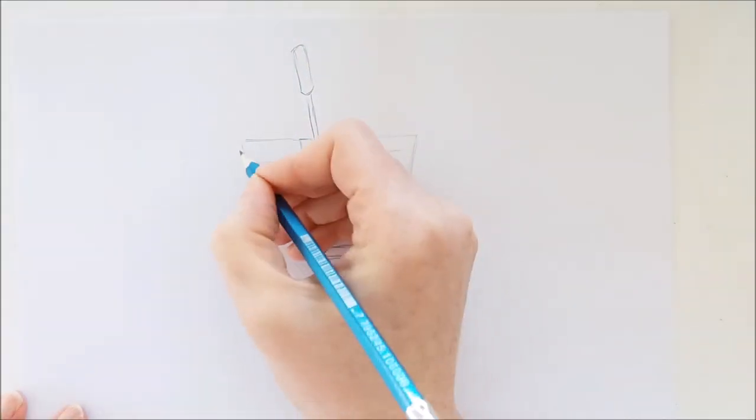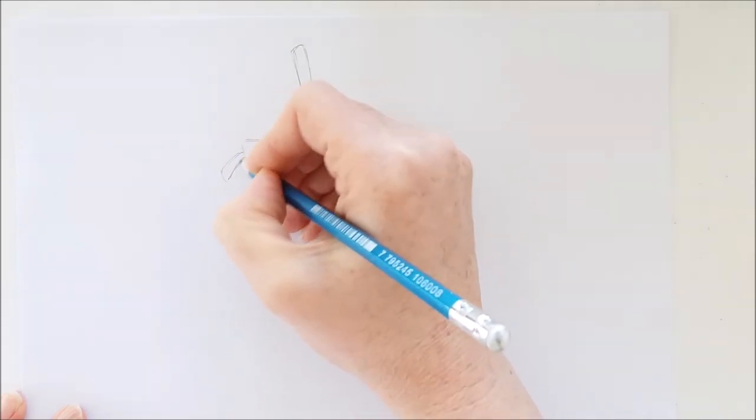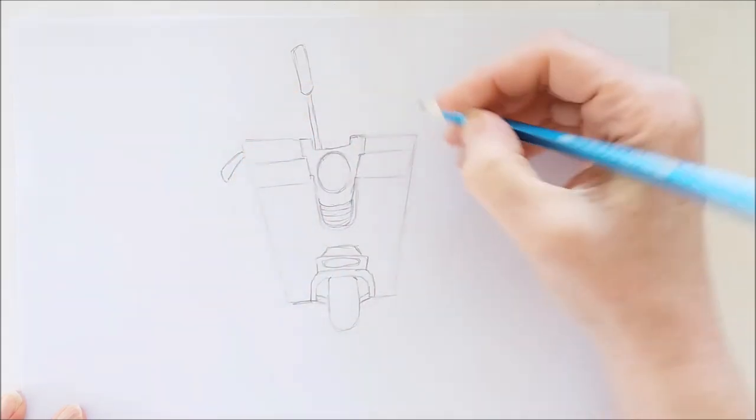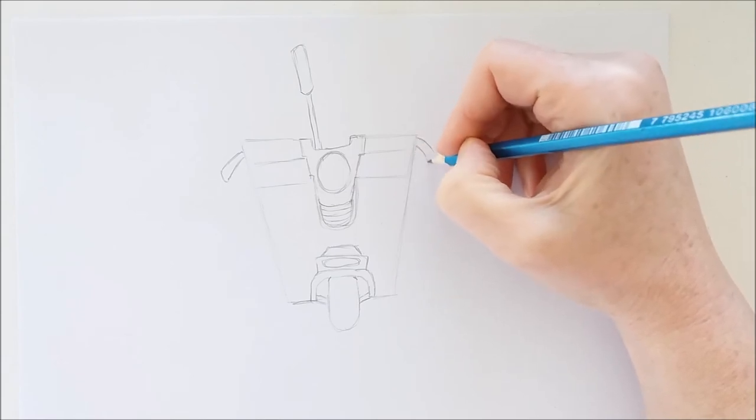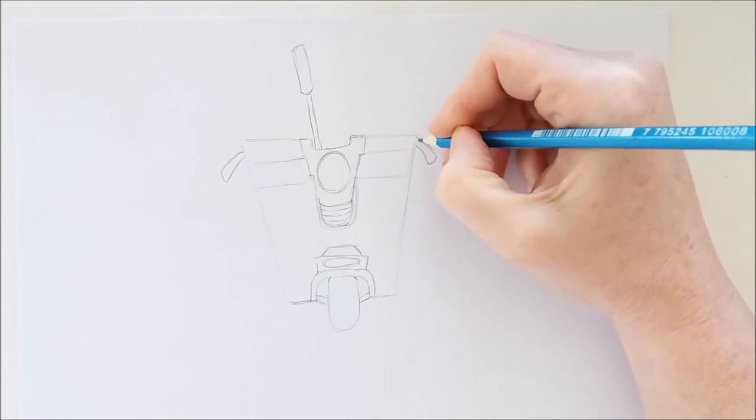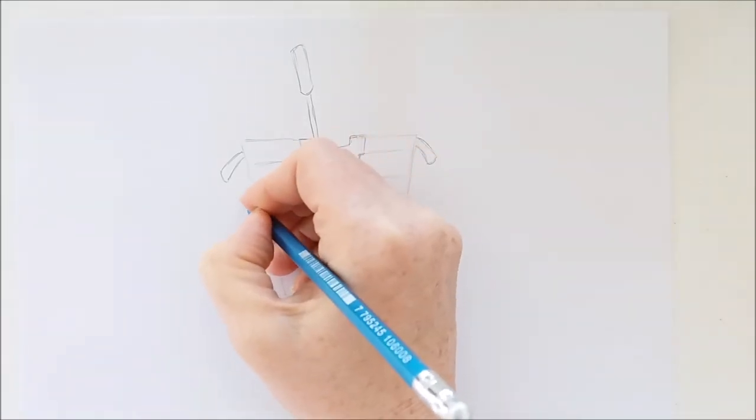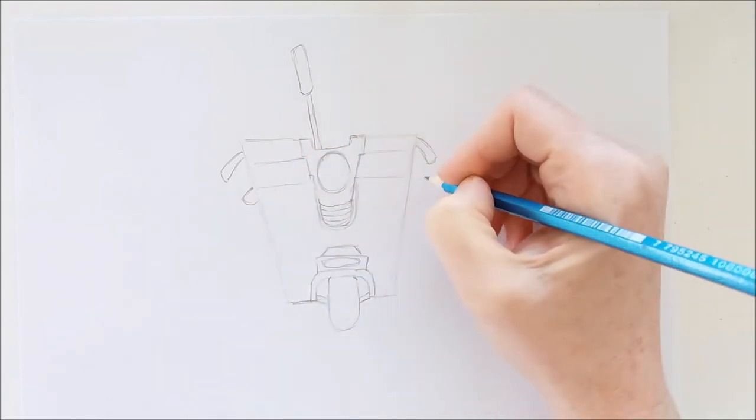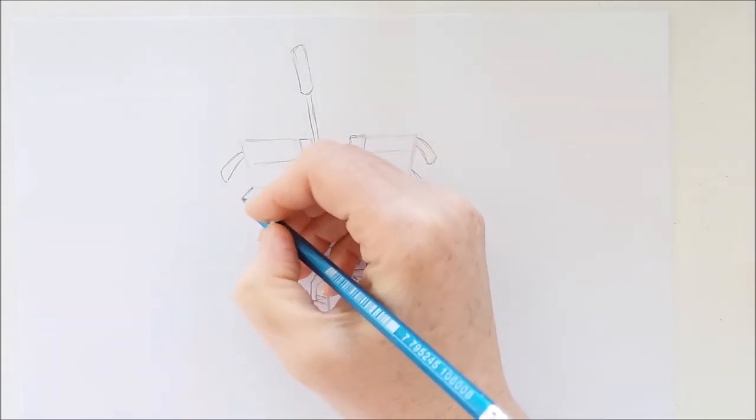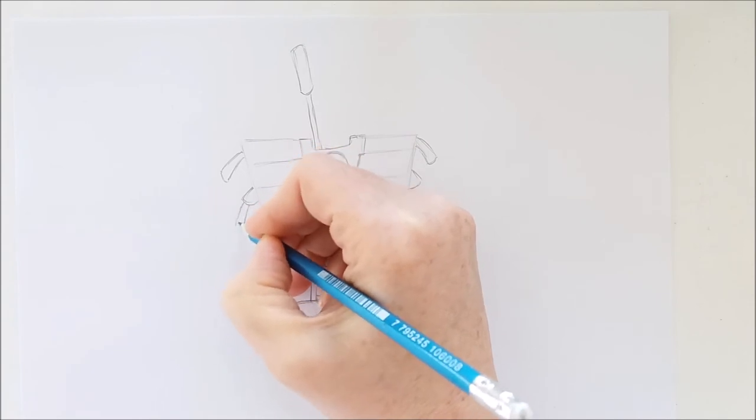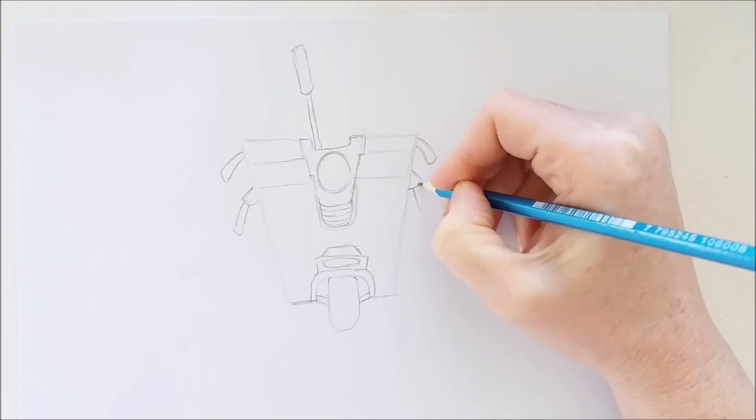I'm just going to draw a rectangle here that comes out at an angle, and another rectangle here curves out at an angle. Then below that, I'm going to draw a triangle. I'll do the same thing over here. These are the arms of Claptrap. Then a little rectangle, and we'll go over and do it on the other arm.